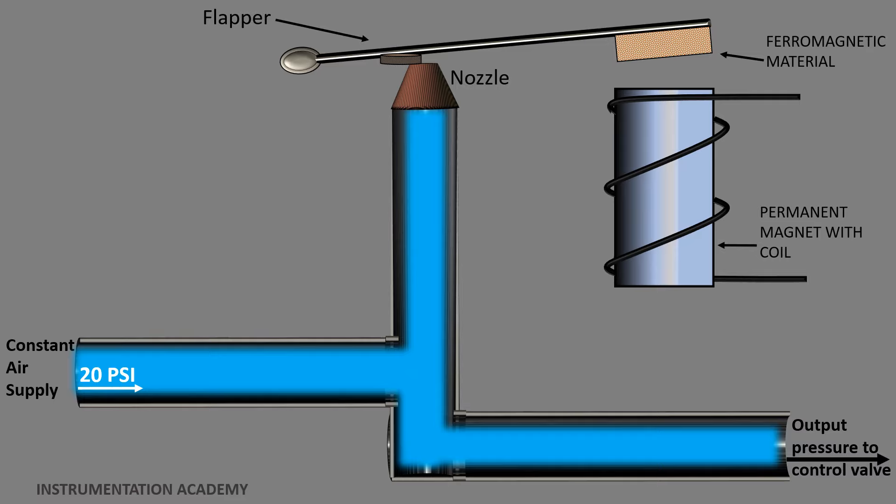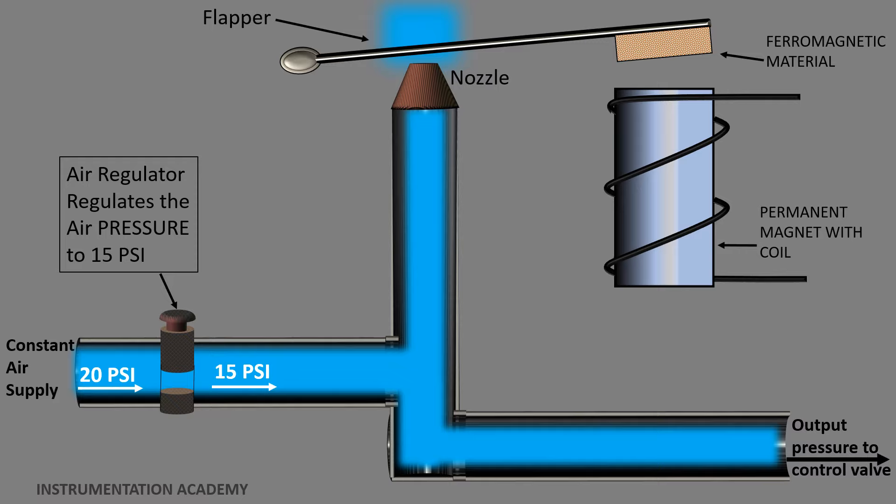If the nozzle is covered and no air is allowed to pass through the nozzle, then all the 20 psi supply pressure will be received as the output. If the nozzle is not completely covered, the air escapes through the nozzle and the pressure output will be less than 20 psi. An air regulator is used to regulate the supply pressure in this arrangement.